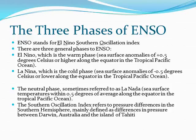La Niña, which is the cold phase, has sea surface temperature anomalies of minus 0.5 degrees Celsius or lower along the equator in the tropical Pacific Ocean. The neutral phase, sometimes referred to as La Nada, has sea surface temperature anomalies within 0.5 degrees of average along the equator in the tropical Pacific Ocean.